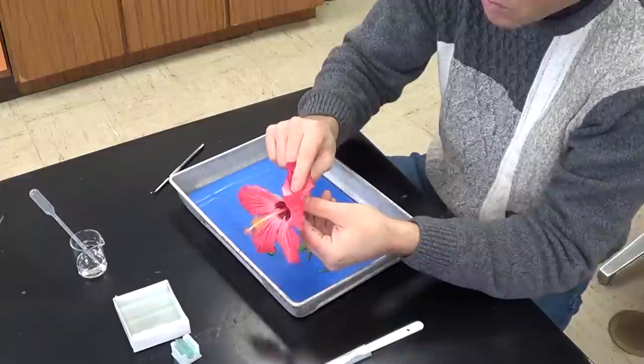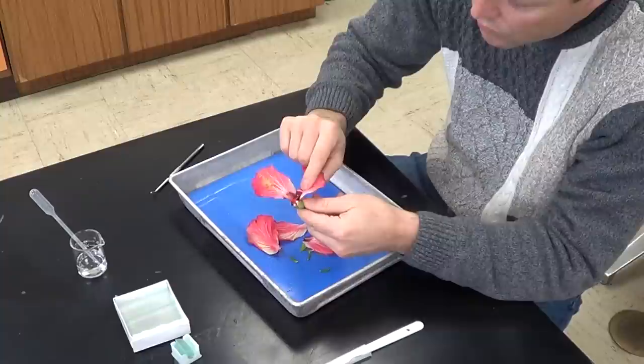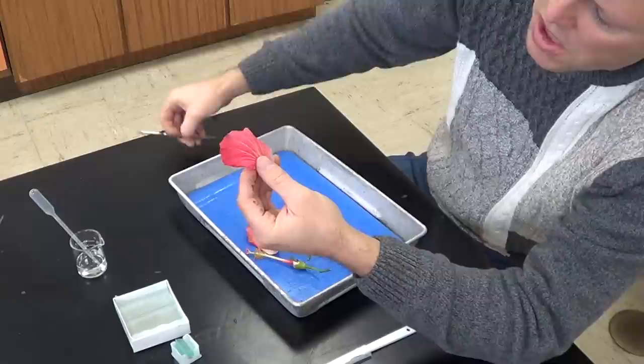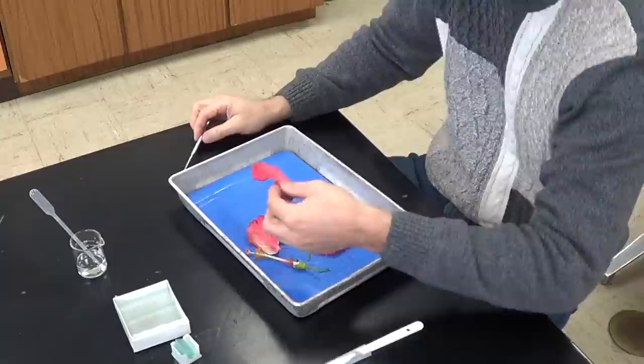So we removed and counted the sepals. Now I'm going to do the same thing with the petals. So one, two, three, four, and five. Again, if you look at the petal closely, you can see that the veins actually branch, an indication that it's a dicot.